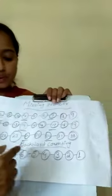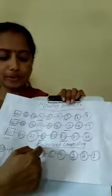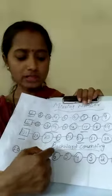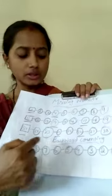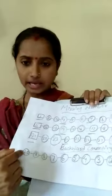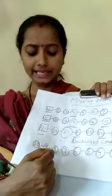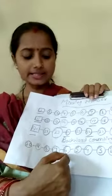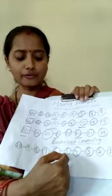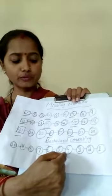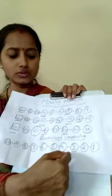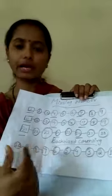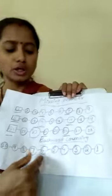And now, I am going to teach backward counting. Backward counting start: 10, 9, 8, 7, 6, 5, 4, 3, 2, 1. It's your backward counting.